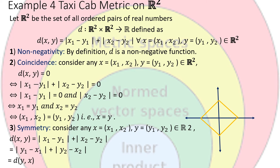Clearly by definition, d is a non-negative function as the modulus is always non-negative. Second is to check coincidence: for all x equals (x1, x2) and y equals (y1, y2) in R2, setting d(x,y) equals 0 gives modulus of (x1 minus y1) plus modulus of (x2 minus y2) equals 0, which in turn gives x equals y. Next is to check symmetry.